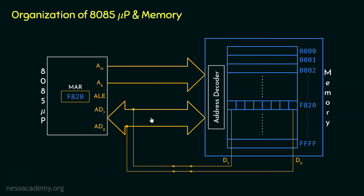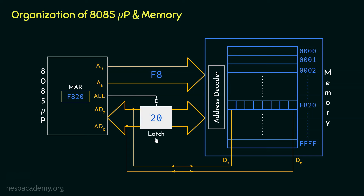Let me show how address F820 is loaded on the bus. This is a 16-bit address represented as four hexadecimal digits. F8 is the higher order 8 bits and will be loaded on channels A15 to A8. The lower order 8 bits, 20, will be loaded on AD7 to AD0. Currently this bus is carrying the lower order bits of the address, so ALE is enabled.